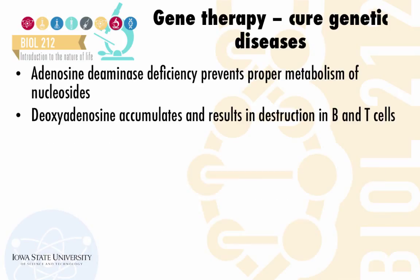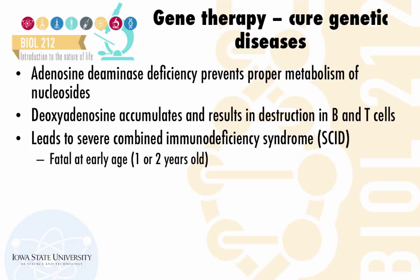Adenosine deaminase is an enzyme that metabolizes deoxy adenosine. The lack of this enzyme leads to the accumulation of deoxy adenosine and results in the destruction of B and T cells, which are part of the immune system. This leads to severe combined immunodeficiency syndrome, or SCID, which can be fatal at an early age.